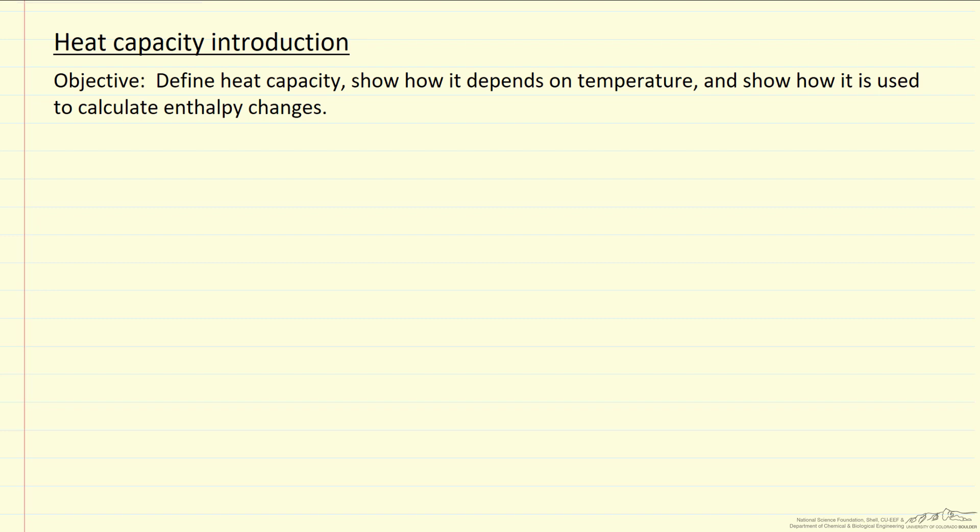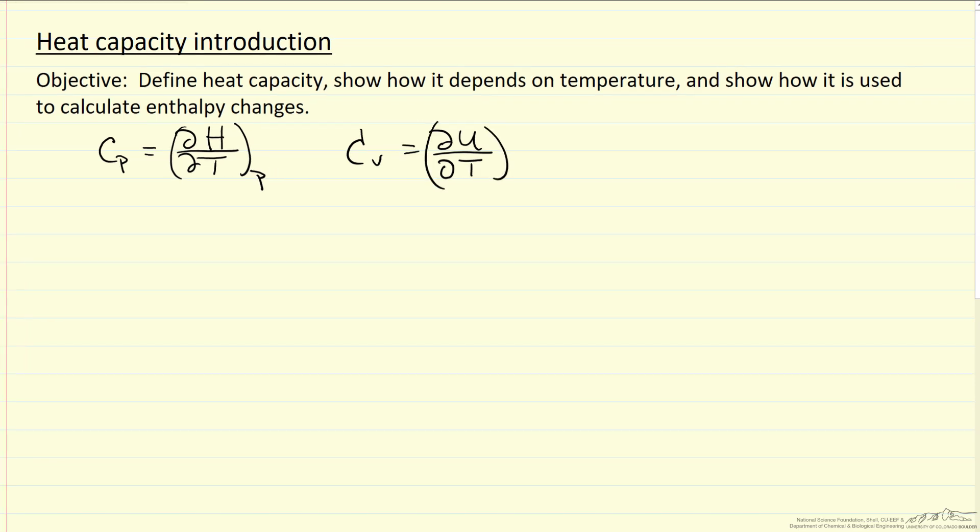I'm going to give a brief introduction to heat capacity. One way we can define heat capacity is it's a partial derivative of the enthalpy with respect to temperature at constant pressure, that's Cp, and then partial derivative of internal energy with respect to temperature at constant volume.